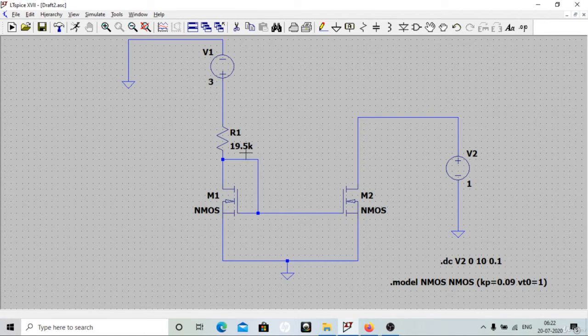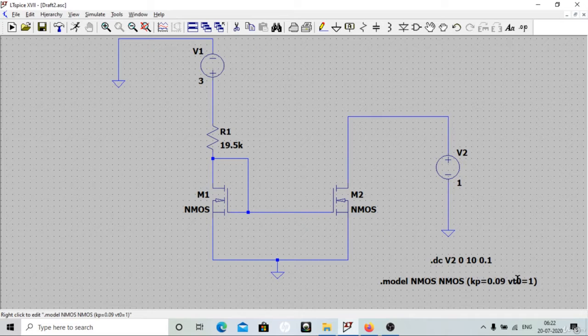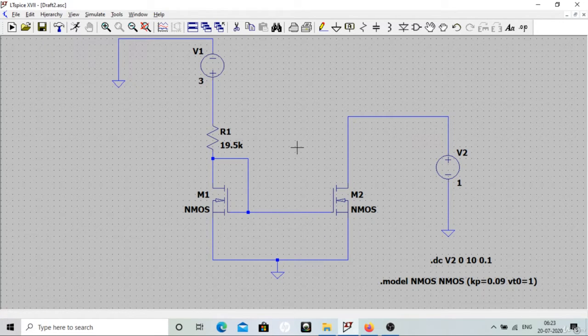Resistance value is 19.5k, this is 3 volt, and this is 1 volt which we are varying from 0 to 10 at the step size of 0.1 volt. And in modeling of NMOS you can see I have written the threshold voltage 1 volt and the transconductance parameter 0.09 or 90 milliampere per volt.